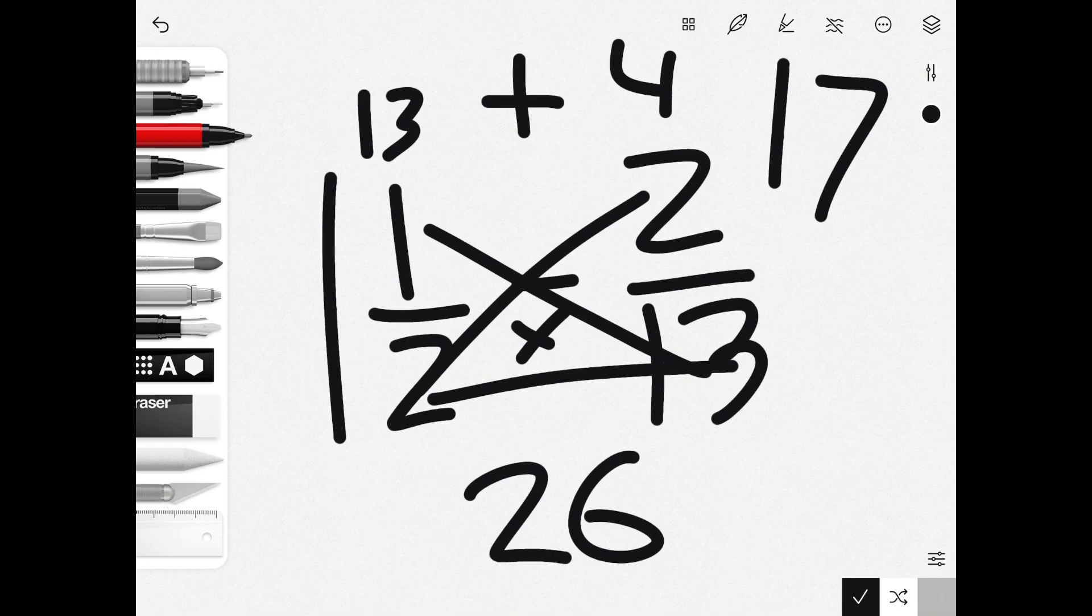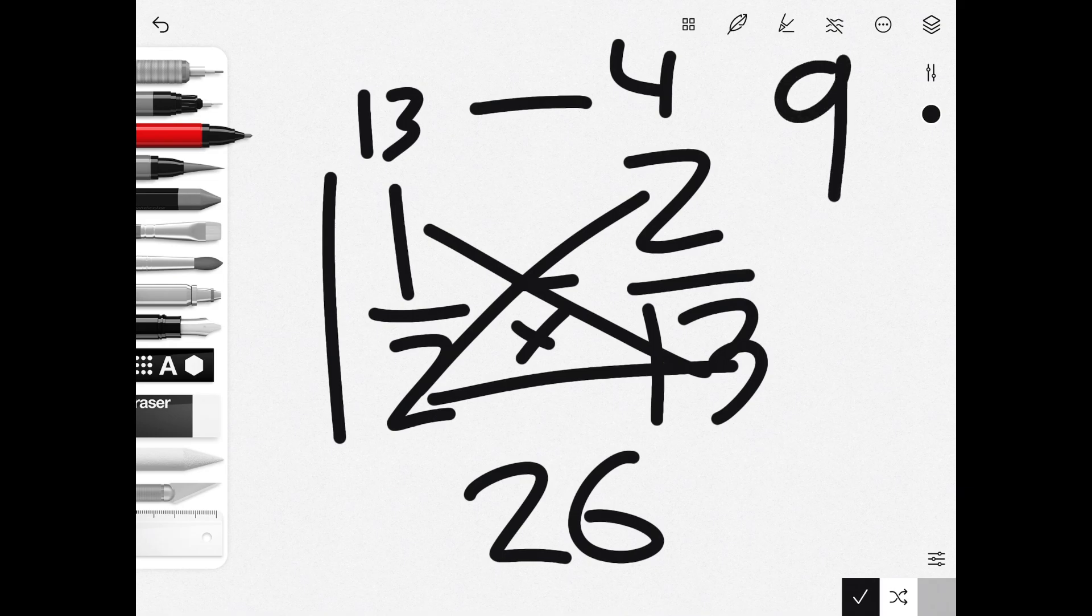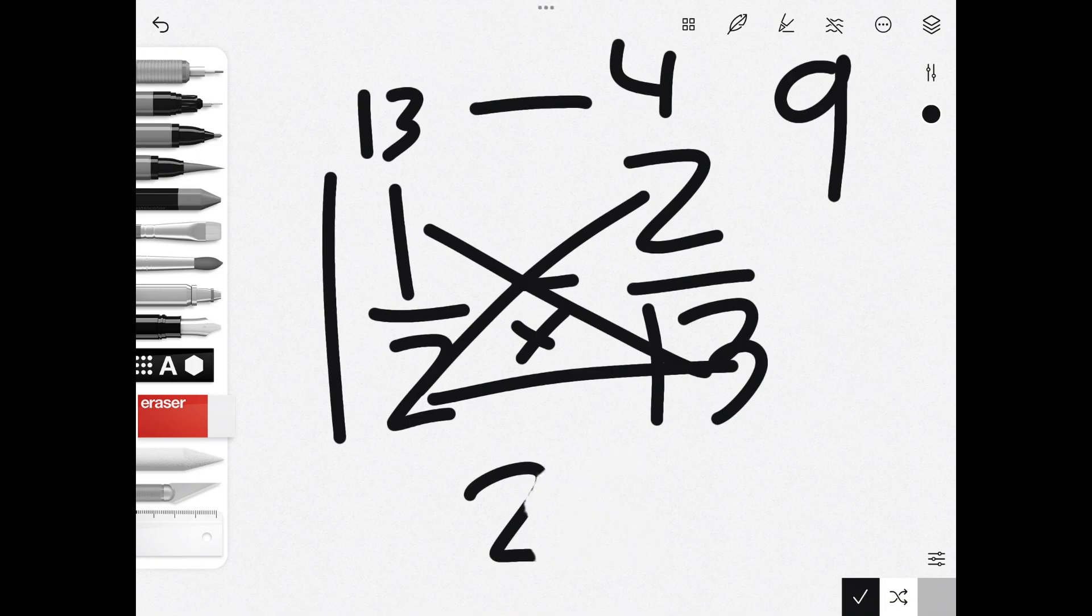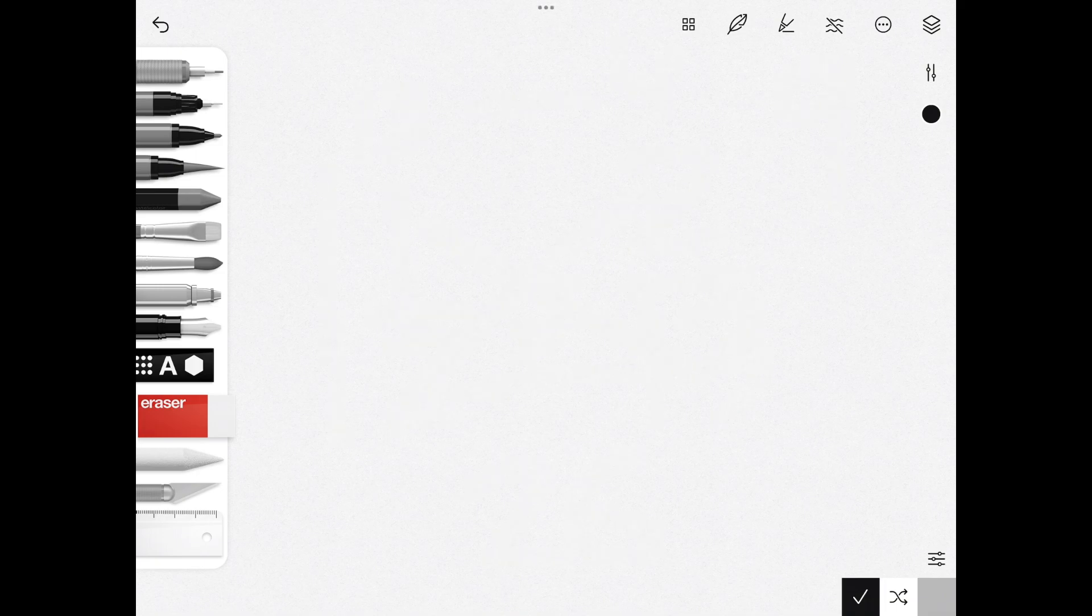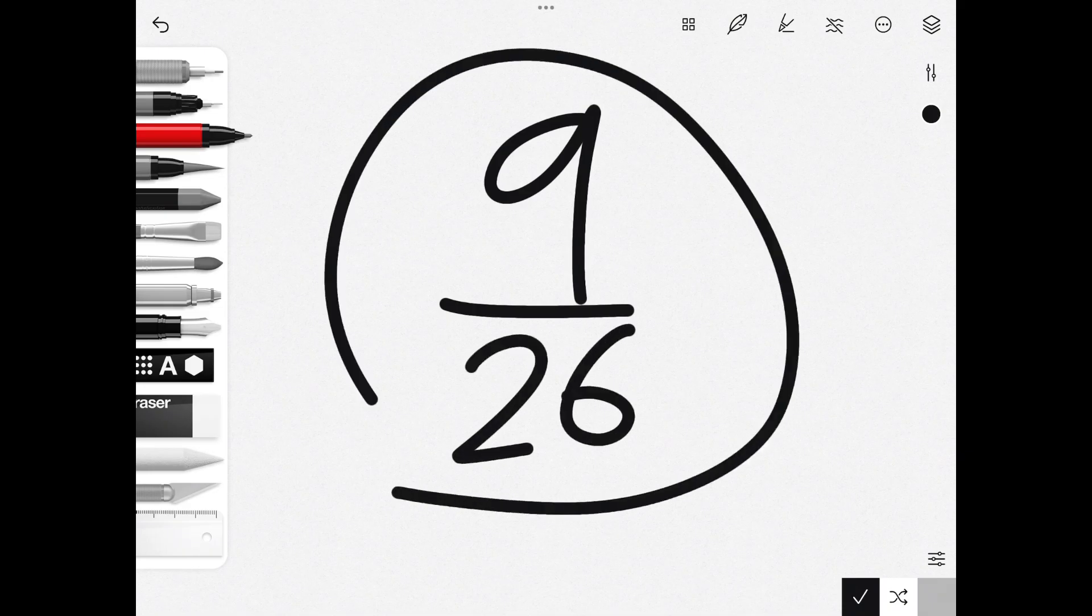So it's going to be 13 minus 4 equals 9. We bring the 9 above the 26, and that would be 9/26.